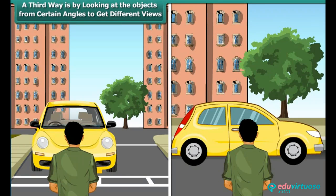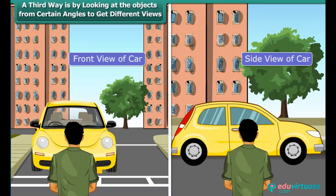We can look at the object by just standing in front of it and from the side and top as well. Let us see some of the objects through this method.